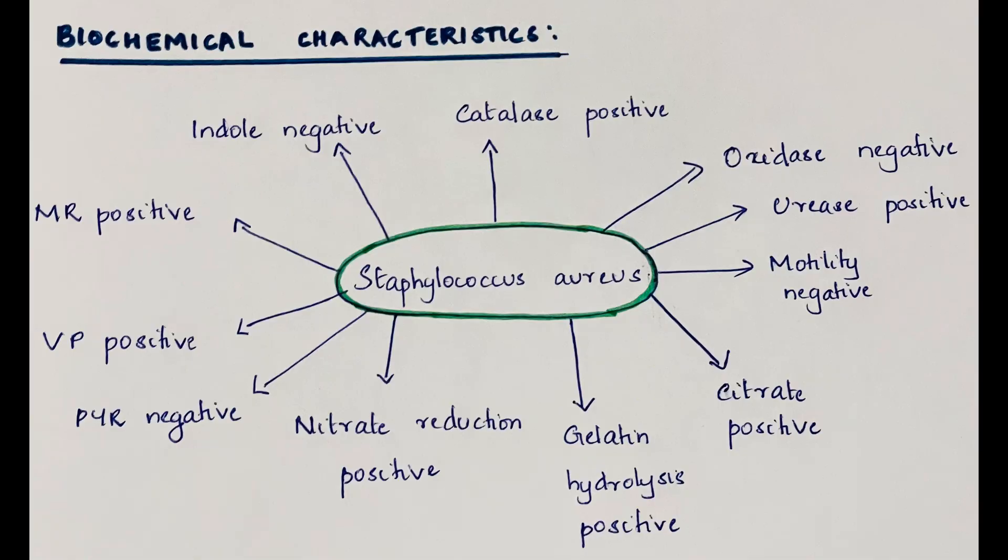Biochemical characteristics of Staphylococcus aureus. They are indole negative, methyl red positive, Voges-Proskauer positive, PYR negative, nitrate reduction positive, gelatin hydrolysis positive, citrate positive, motility negative, urease positive, oxidase negative and catalase positive.